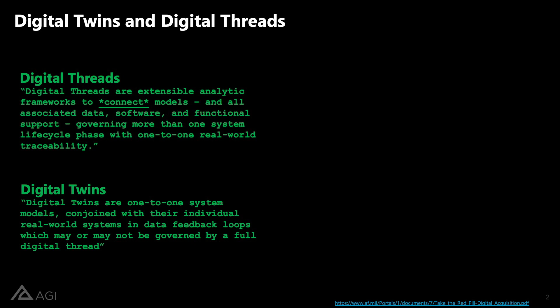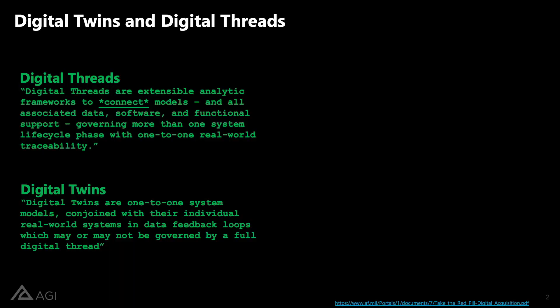A digital twin, on the other hand, is literally a one-for-one matchup — a digital version of some physical reality. So for a spacecraft, a constellation of spacecraft, or a fleet of aircraft, there would be a digital twin of a particular tail number. That's all the models that represent that particular system, with a constant feedback loop of real data from the real system that's constantly maturing that data. Many times the digital twin is built on a foundation of these digital threads.